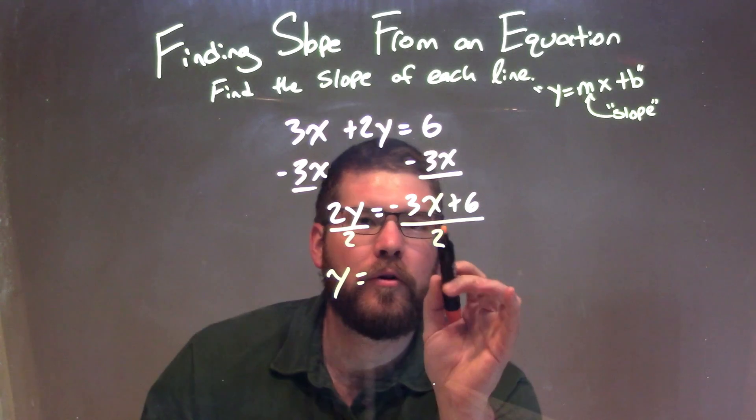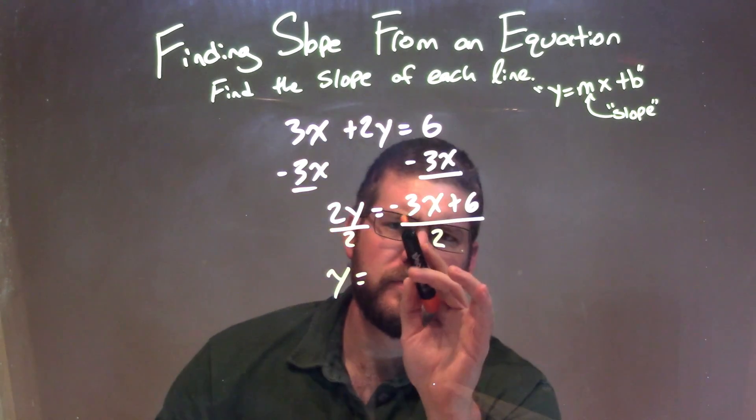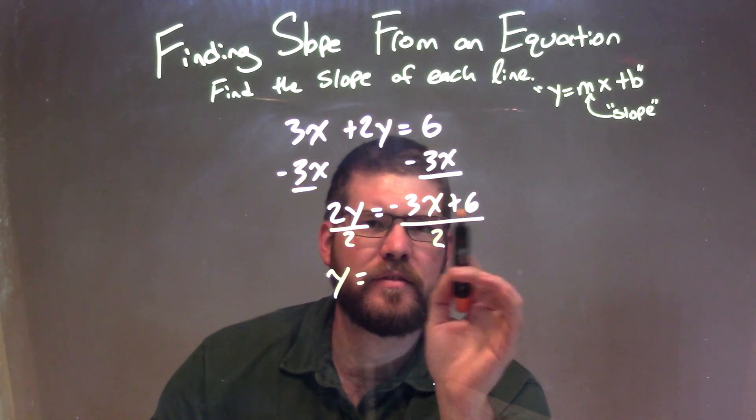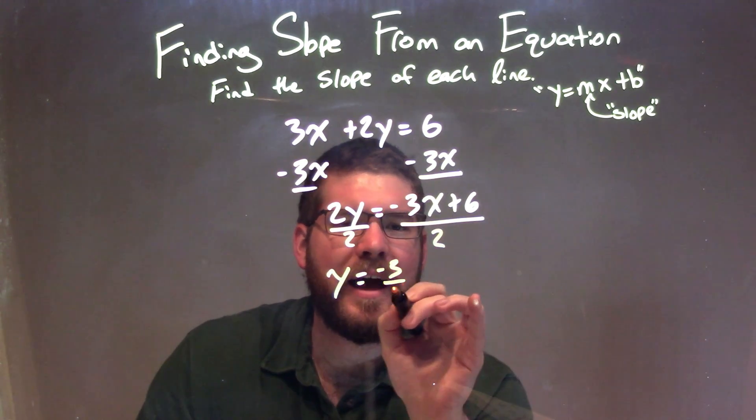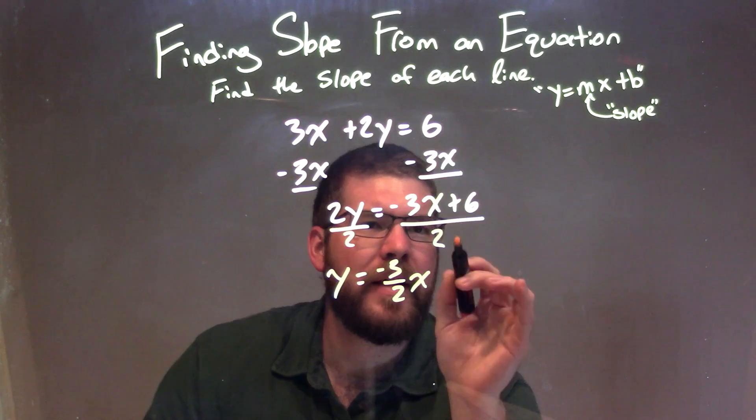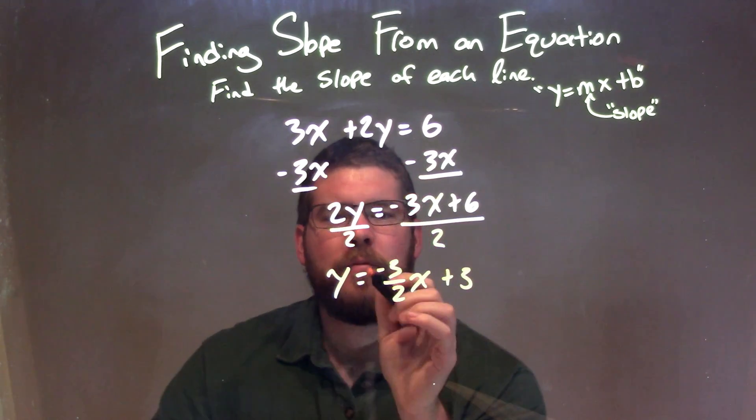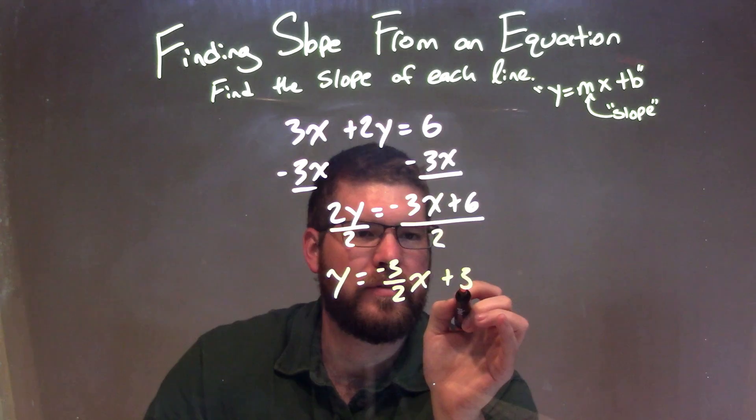Now this 2, I need to distribute to both parts: negative 3x and plus 6. Negative 3x divided by 2 is negative three-halves x, and 6 divided by 2 is 3. So we have y equals negative three-halves x plus 3.